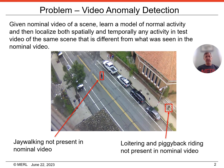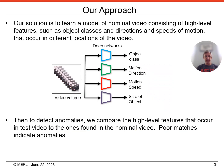This paper addresses the problem of video anomaly detection. We're given nominal video of a scene from which we learn a model of normal activity, then given test video of the same scene we want to localize any activity that is different from what was seen in the nominal video. Our solution is to learn a model of nominal video consisting of high-level features such as object classes, directions and speeds of motion that occur in different locations of the video. Then to detect anomalies we compare the high-level features that occur in test video to the ones found in the nominal video. Poor matches indicate anomalies.